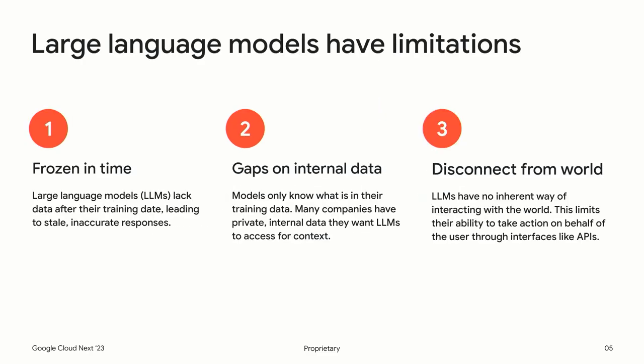First, they are frozen in time — they don't have access to new data after their final training date. This leads to stale or inaccurate responses, and means they can't access internal, company-specific data after training. Foundation models are usually trained on publicly available data, but many organizations have large troves of internal data they'd like models to securely access. Finally, they can't interact with the world — they can't access common interfaces like APIs, which limits their ability to take action for users.